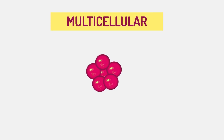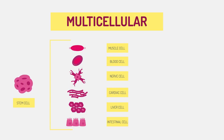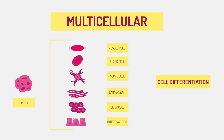All other organisms are multicellular. They consist of multiple cells and are more complex. The vast majority of plants and animals are multicellular. Being multicellular allows the organisms to be larger and have cell differentiation, so different types of cells carry out different tasks.